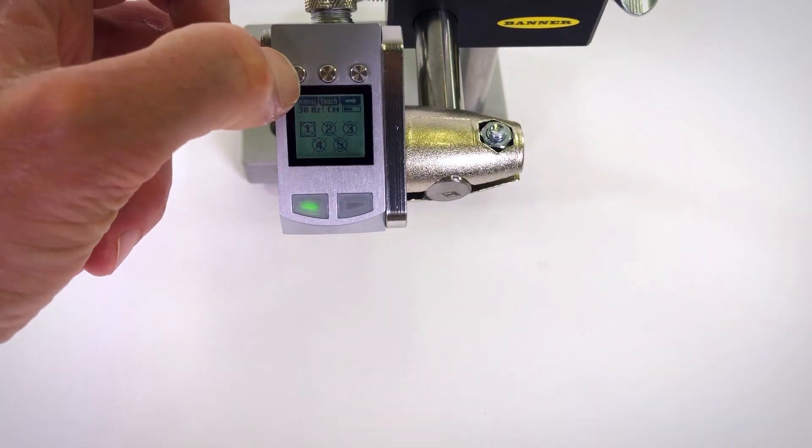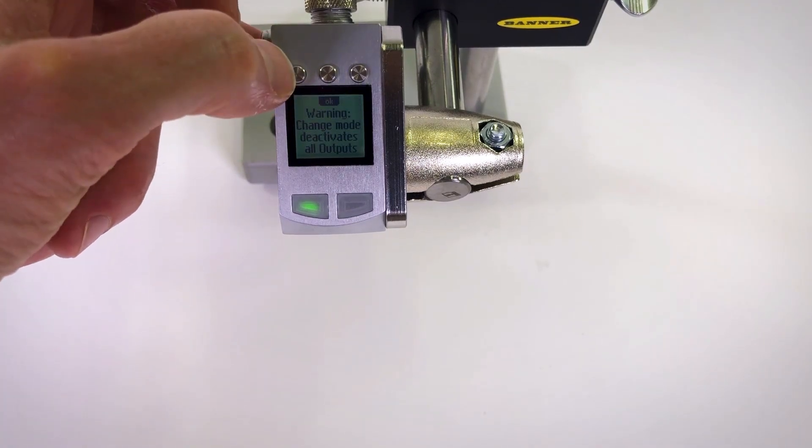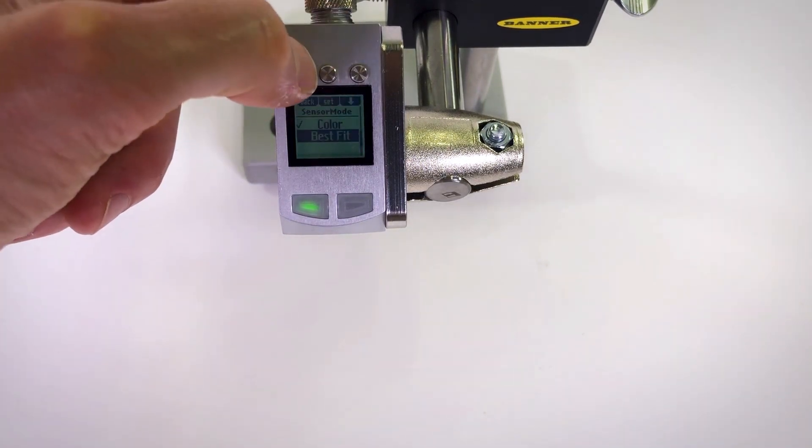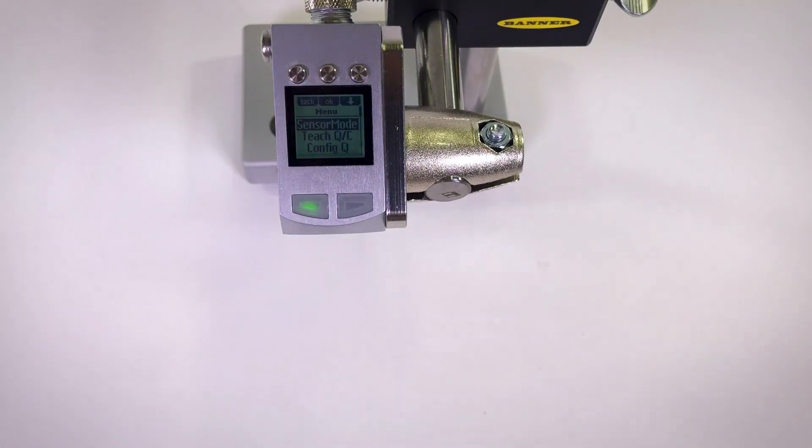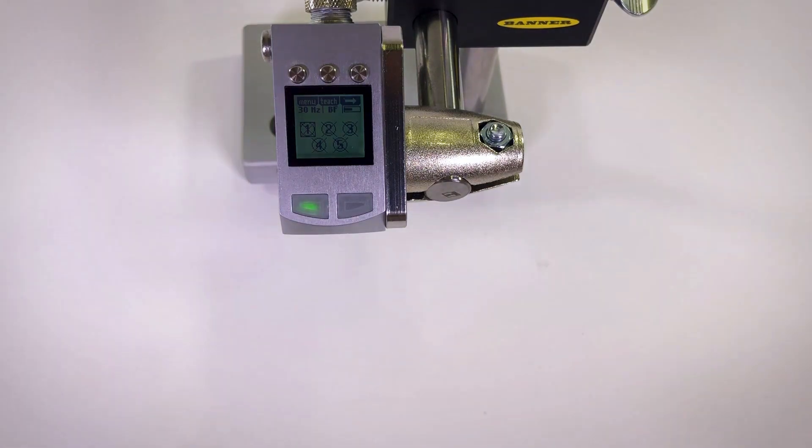With the LCD unlocked, we can press the menu button and select sensor mode. The sensor will give us an informational box stating that all of our outputs will turn off. Press OK on this screen. Use the down arrow and select best fit and press OK. Pressing the back button now returns our sensor to run mode and we are ready to teach the sensor.